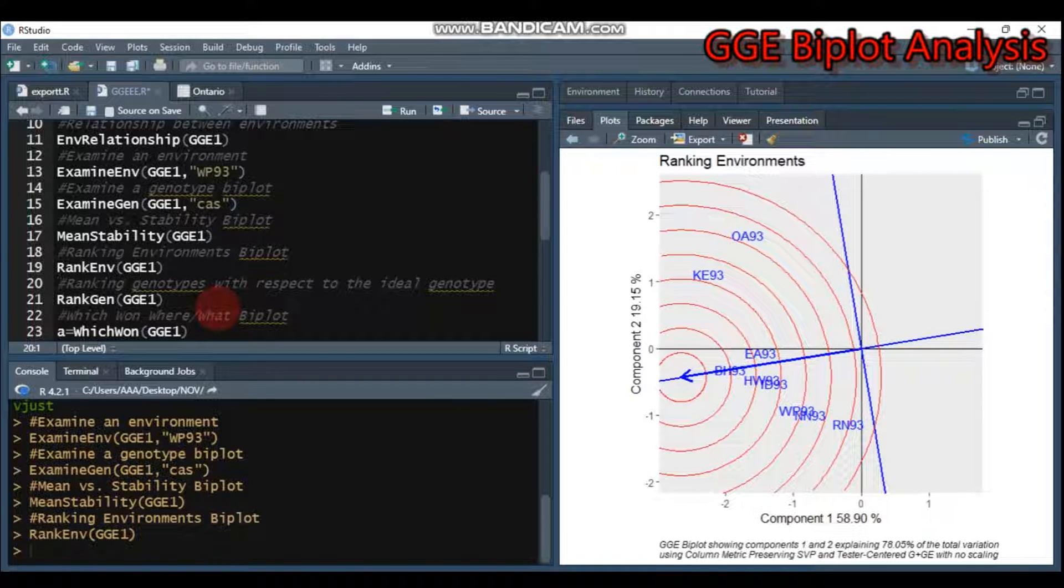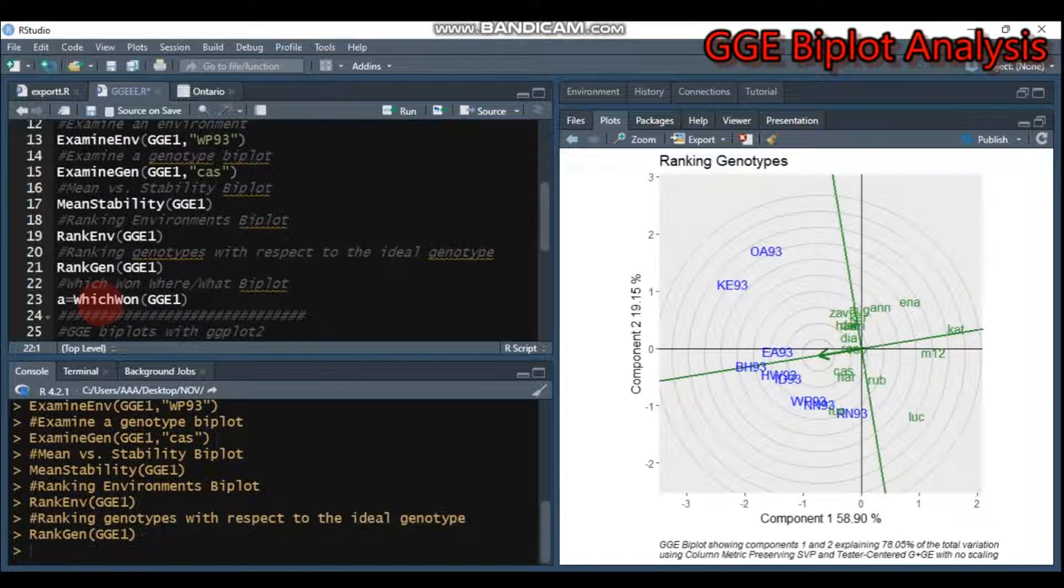If you want ranking of genotypes with respect to the ideal genotype, you have to use the rank.gene function, then provide the model. Type this and submit to R Studio, and you can get the genotypes with respect to the ideal genotype.